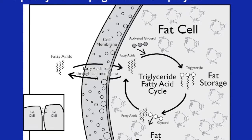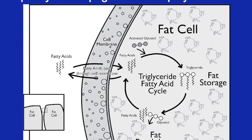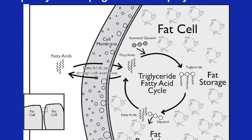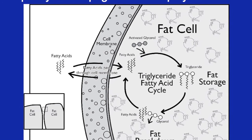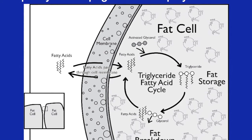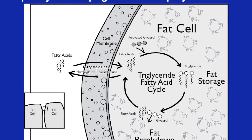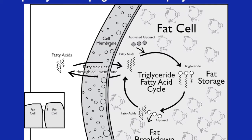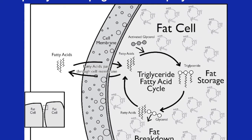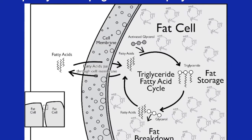This is the triglyceride-fatty acid cycle. Fatty acids pass through the cell membranes, being attached to activated glycerol as glycerol-3-phosphate, combined into triglycerides, then broken down into glycerol and fatty acids. If fatty acids aren't re-esterified, triglycerides don't escape from the fat cell. So what we want to know is what controls the flow of fatty acids across the membrane, the esterification into triglycerides, and the breaking down of triglycerides back into fatty acids.